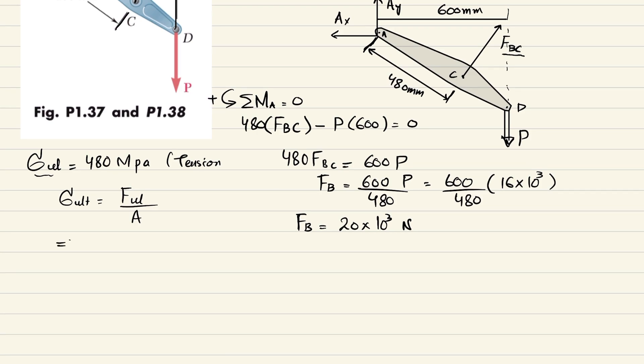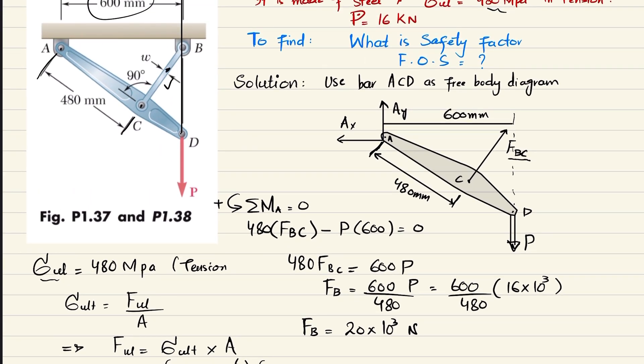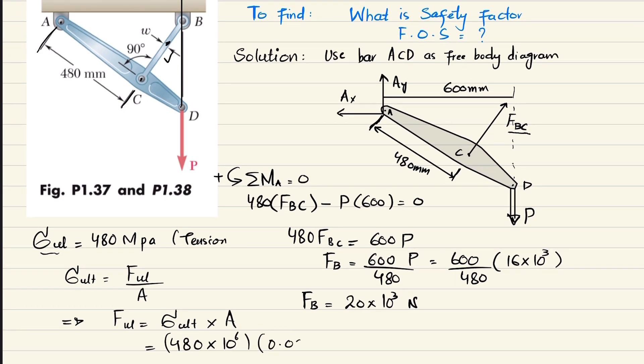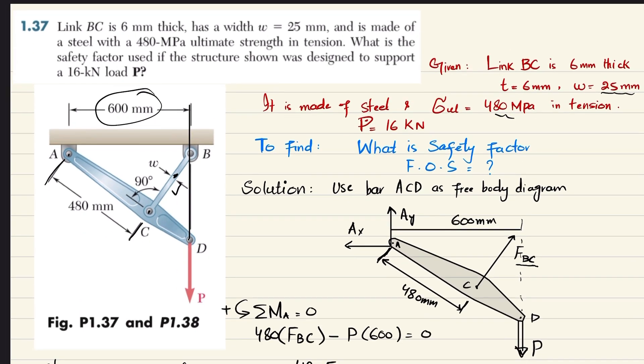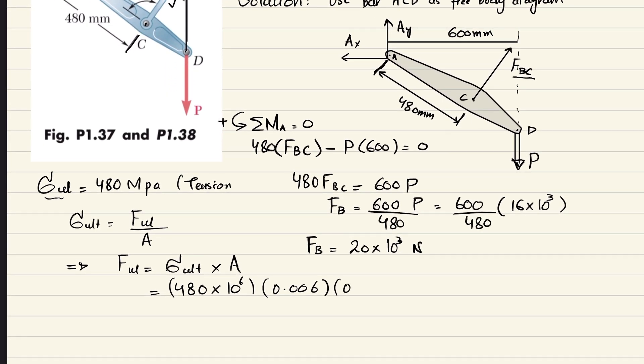Sigma ultimate is 480 megapascal, so 480 times 10 to the power 6. What about the area? Its thickness is 6 millimeter, which in meter is 0.006, and width is 25 millimeter, which is 0.025. When you calculate it, you get F ultimate is 72 times 10 to the power 3 newton.